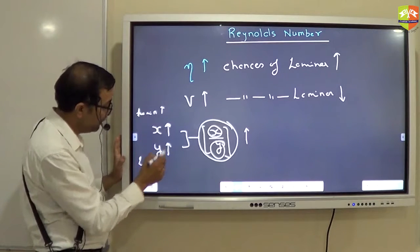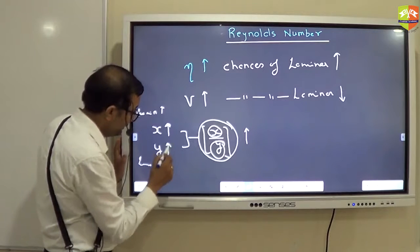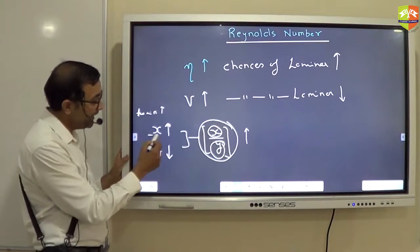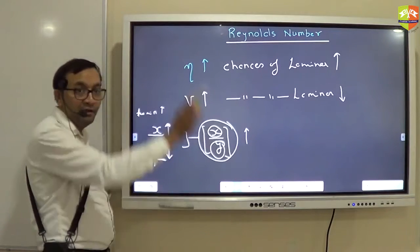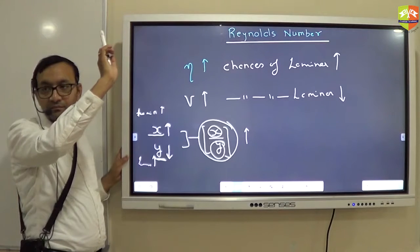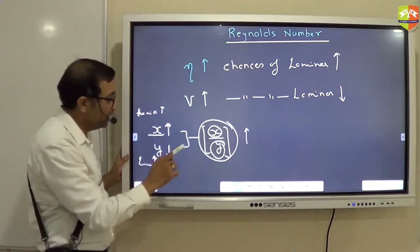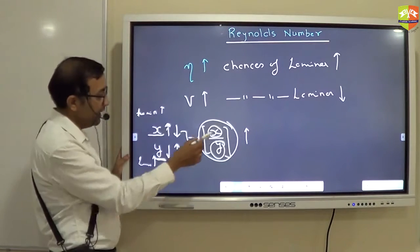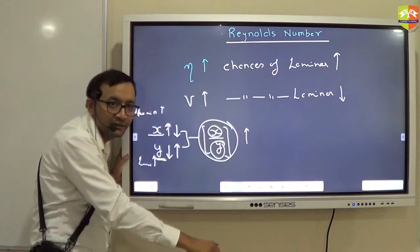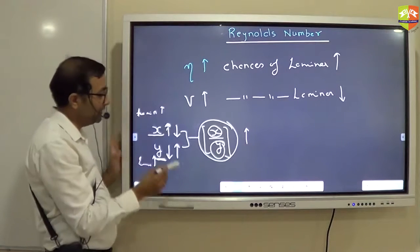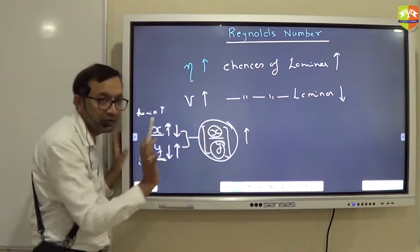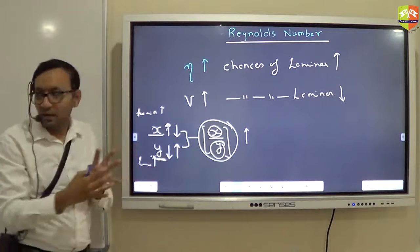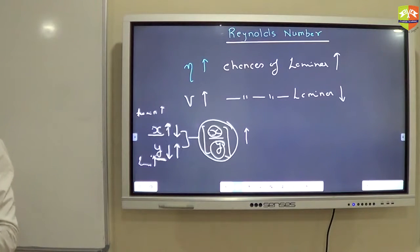When y decreases, chances of laminar increases. So if x increases and y decreases, x by y will increase. Getting it? Now if x decreases, y increases, x by y will decrease. Right? So rather than checking x and y separately, I am checking x by y. So it takes into account both. Are you getting what I am trying to say here?